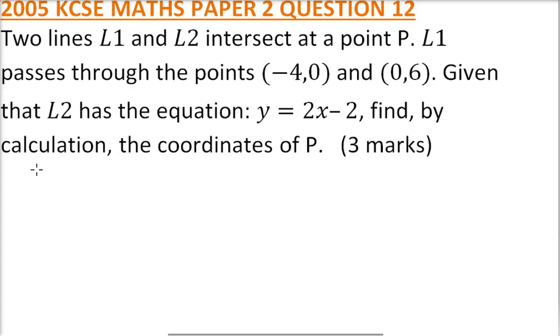2005 paper 2 question 12. We are told two lines L1 and L2 intersect at point P. L1 passes through the points (-4, 0) and (0, 6). Given that L2 has an equation y equals 2x minus 2, find by calculation the coordinates of P.